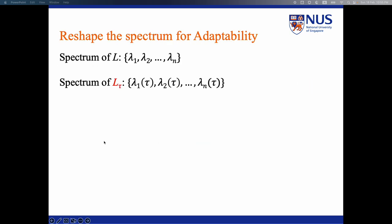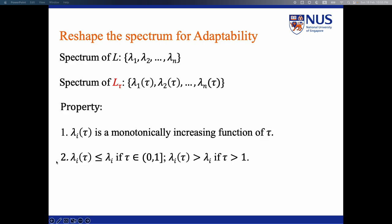We prove that by setting different tau values, it can reshape the spectrum for adaptability. For example, we prove that lambda_i(tau) is a monotonically increasing function of tau, and lambda_i(tau) can be either larger or smaller than original lambda_i by setting different tau values.